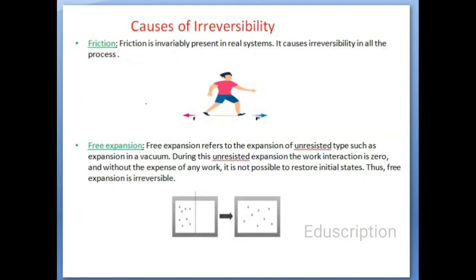What are the causes of irreversibility? The first and most important one is friction. Friction is invariably present in real systems and causes irreversibility in all processes. We cannot eliminate friction — we walk due to friction, we sit due to friction, everything occurs due to friction, so friction is a loss and you cannot omit it. Friction is the main reason behind the causes of irreversibility. The second one is free expansion, which refers to expansion of an unrestricted type, such as expansion in a vacuum. During this unrestricted expansion, the work interaction is zero, and without the expense of any work it is not possible to restore the initial state — thus free expansion is irreversible.